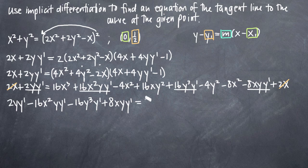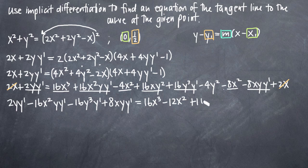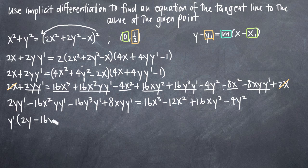Everything else stays on the right-hand side: 16x³, then negative 4x² and negative 8x² combine to give negative 12x², then plus 16xy², and finally minus 4y². Now I factor out y prime on the left, giving y prime times the quantity (2y minus 16x²·y minus 16y³ plus 8xy), still equal to the right-hand side.